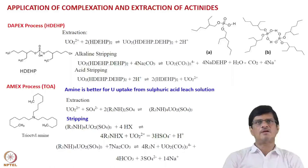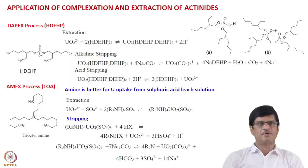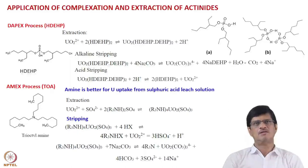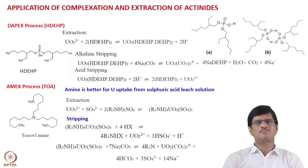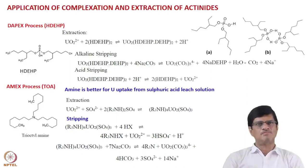Coming to further applications of complexation of actinides: there are the DAPEX process and the AMEX process, which are front-end processes where uranium extraction is done from the leach liquor. Uranium from ores is leached out using either acidic or alkaline leaching, consistent with our complexation theory — uranium forms good complexes with sulfate as well as carbonate, which is why dilute sulfuric acid or carbonate solutions are used for leaching.